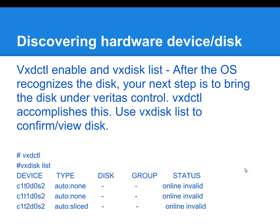In our example, I've run VxDCTL enable — I didn't include it in the slide — but shortly after I ran VxDiskList, and now I can see that Veritas sees all three disks, and they are currently online and invalid.